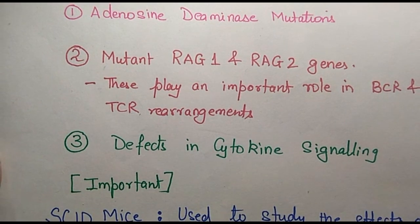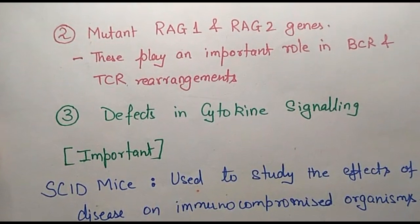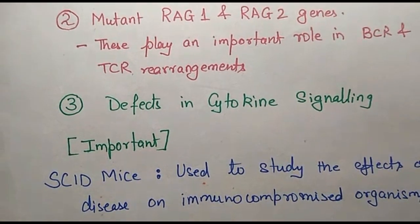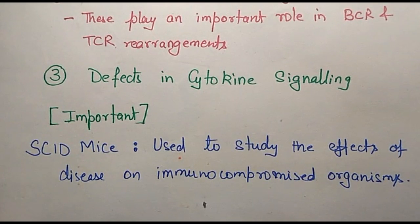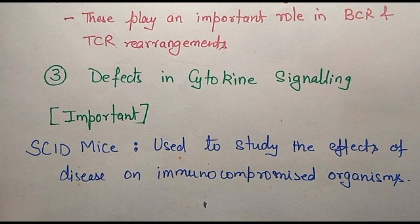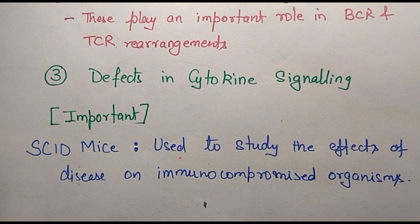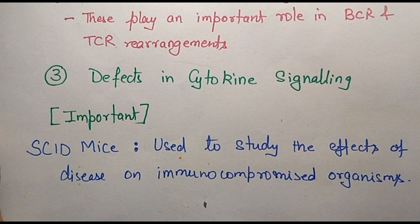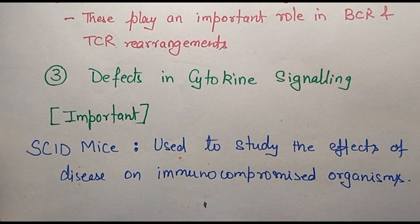Finally, there are certain experimental animals known as SCID mice. SCID mice are experimental animals developed in order to recreate an immunocompromised state in the laboratory — meaning they have non-functional T and B cells. This is done to recreate an immune-compromised situation in an experimental setting and study the effects of various diseases.